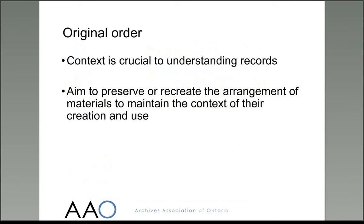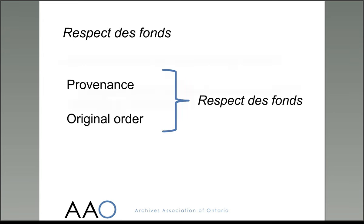The second important archival principle is known as original order. This is the idea that the way in which records were maintained by their creators and by subsequent owners is vital to understanding what they were used for and how they relate to each other. In organising records, archivists generally aim to recreate the filing system used by the creator of the records as much as they can, to maintain that context. Together, these two principles of provenance and original order form an overall concept known by archivists as respect des fonds.